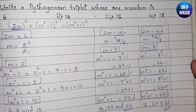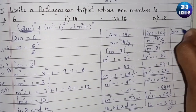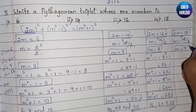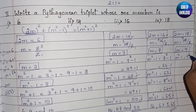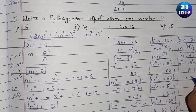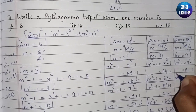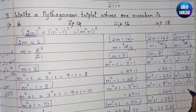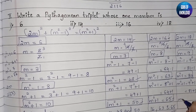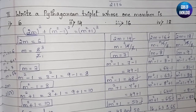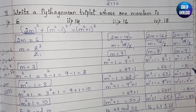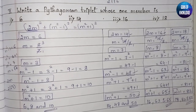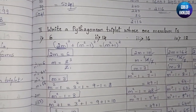For the last one, member 18: we consider 2m = 18, so m = 9. Then m²-1 = 81-1 = 80, and m²+1 = 81+1 = 82. So the Pythagorean triplet is 18, 80, and 82.